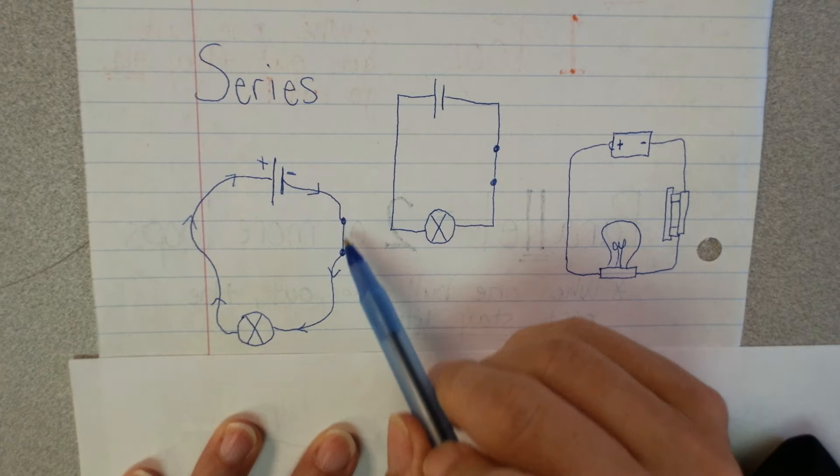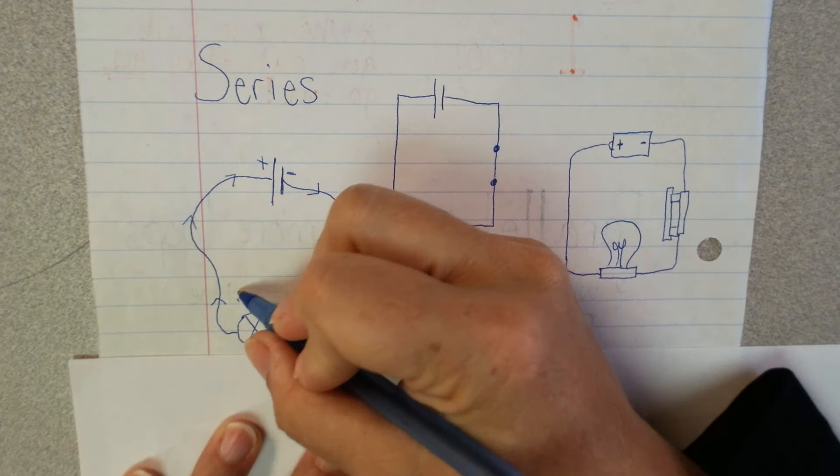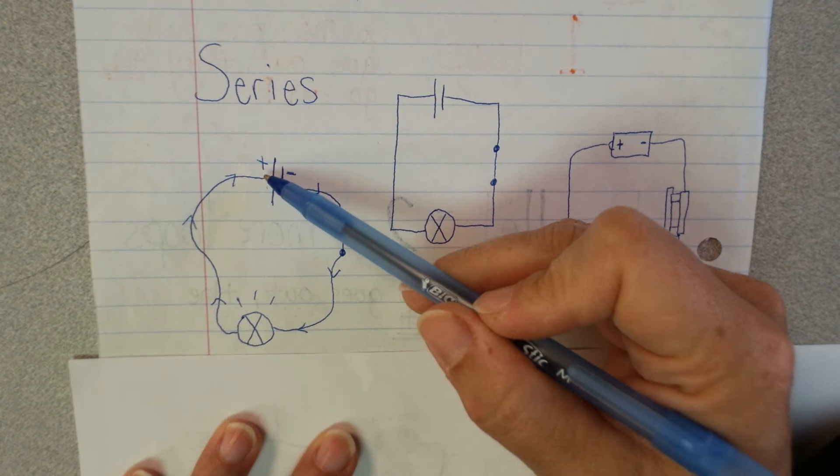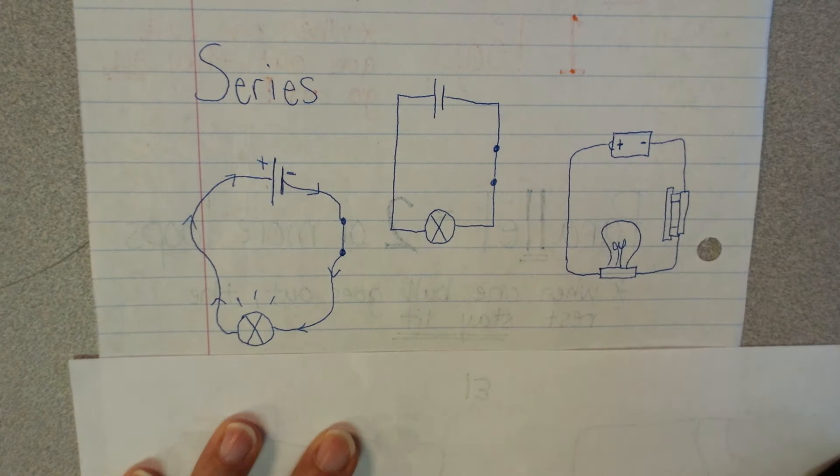If we can go from the negative around to the positive, then this little bulb is going to light up. If I can't get back over to the positive, it's not going to work.